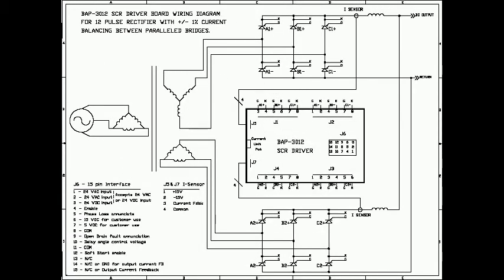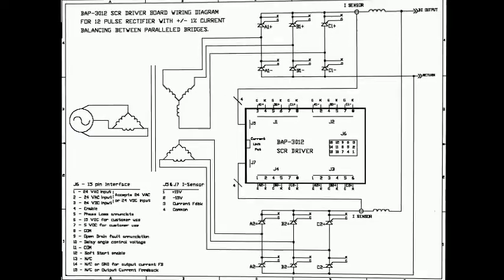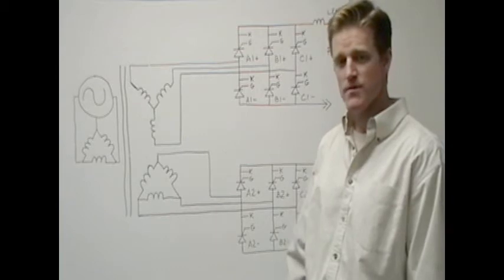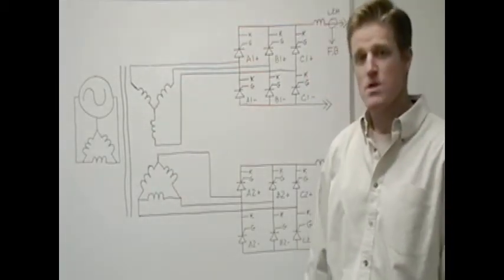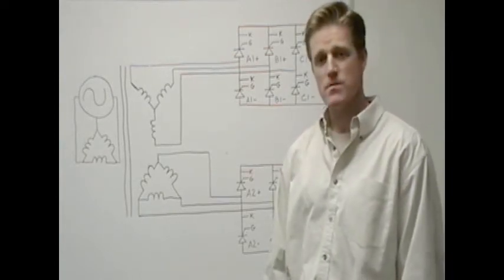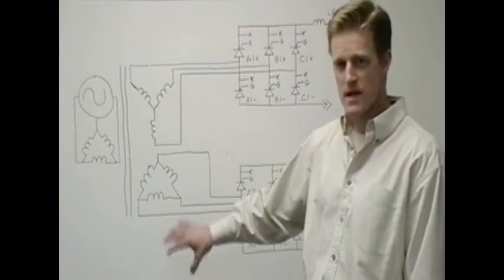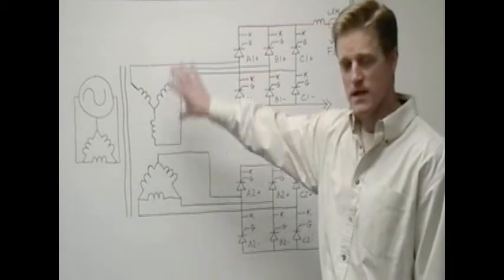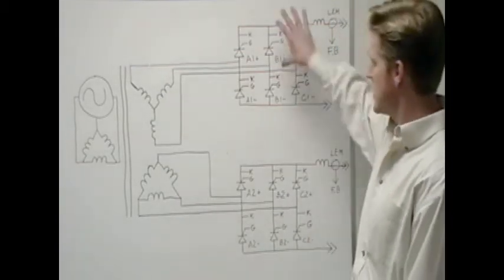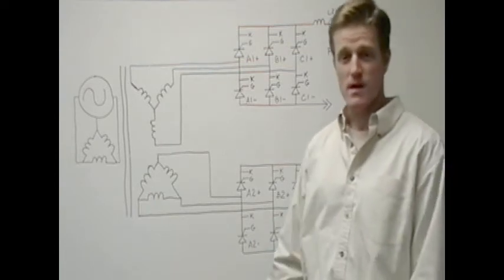Regardless of what topology you select, you will often have undesirable mismatches in the currents out of the parallel bridges. This is due to the mismatches in the turns ratios of the transformer secondaries. In order to create a 12 pulse rectifier, you need a 30 degree phase shift between the two secondaries. Transformer manufacturers do the best they can to match the turns ratios out of these secondaries, but it often results in a finite mismatch in the voltage out of these secondaries, which creates a mismatch in the voltages of your bridges.